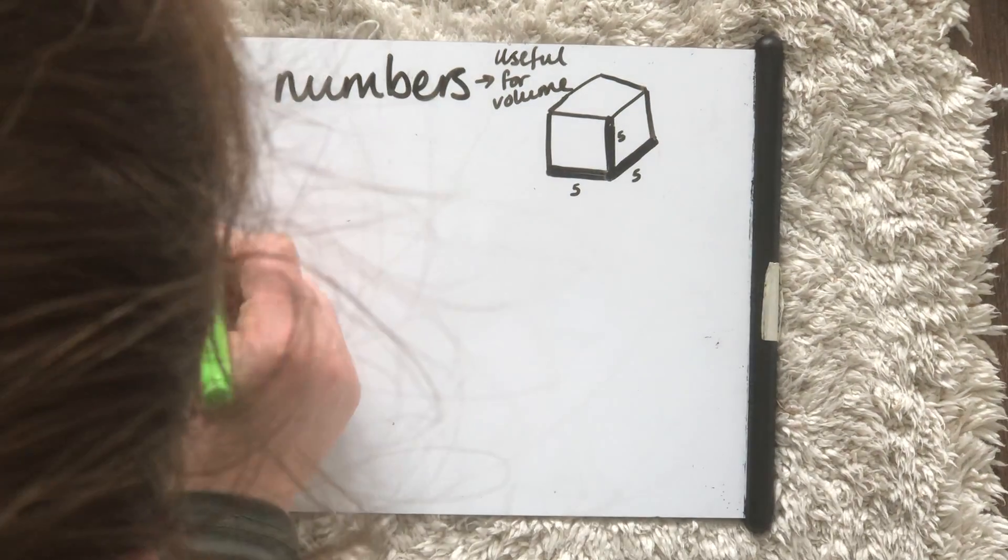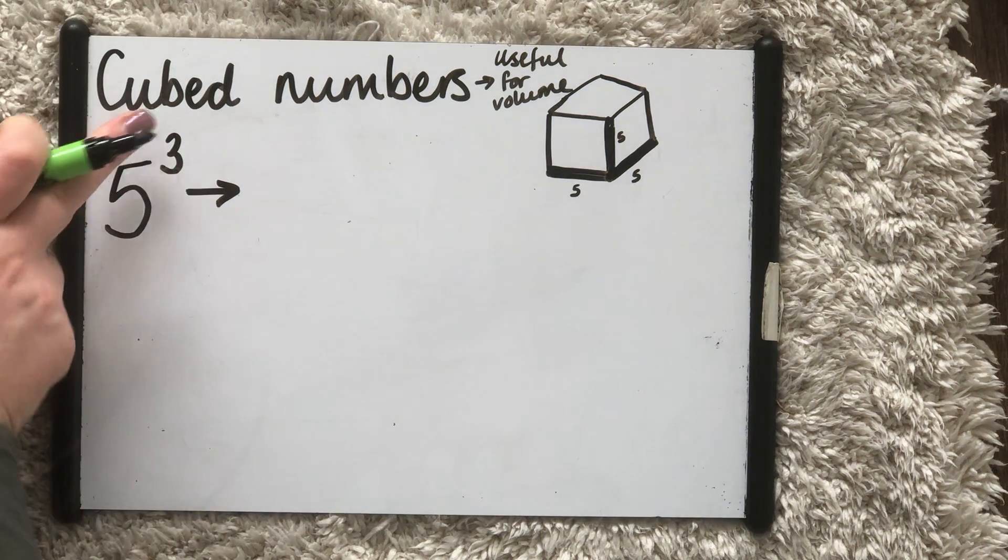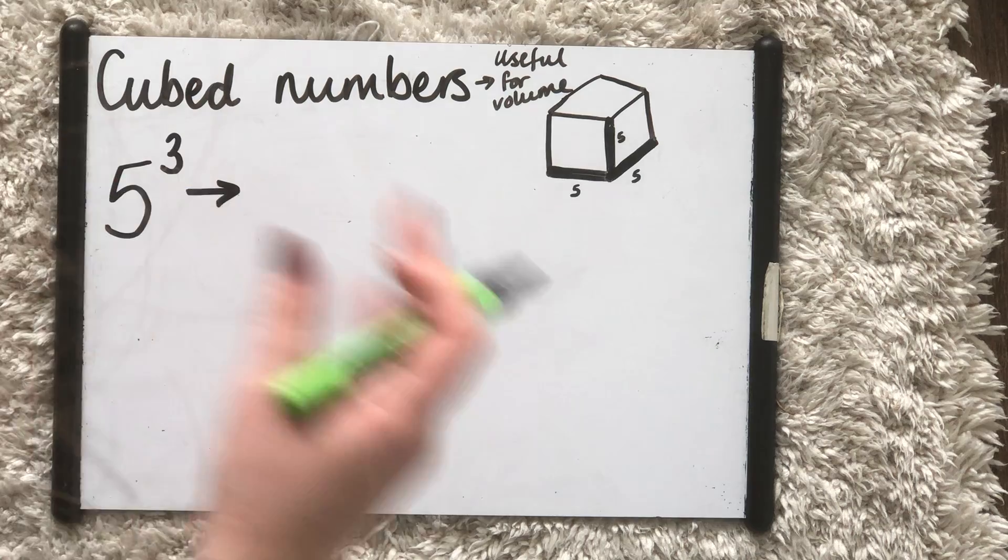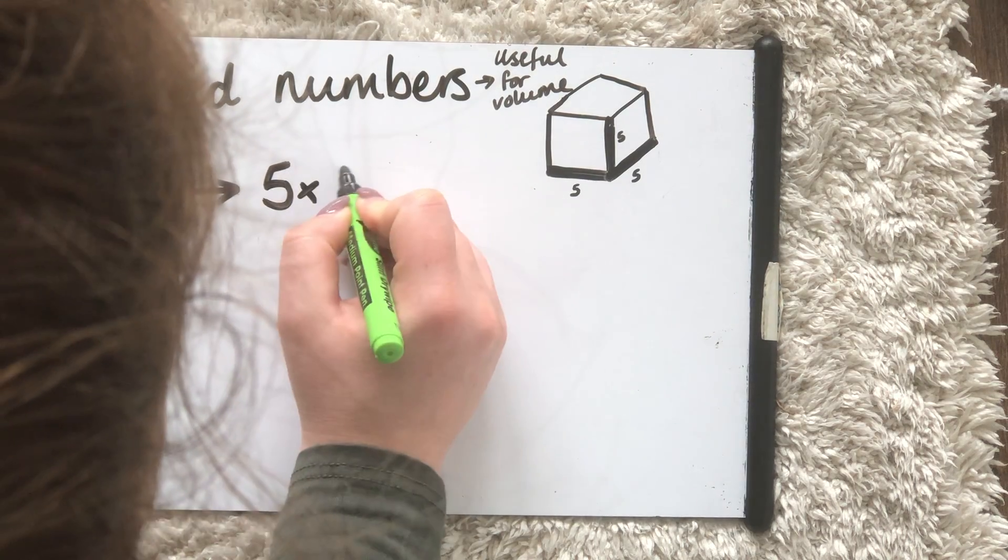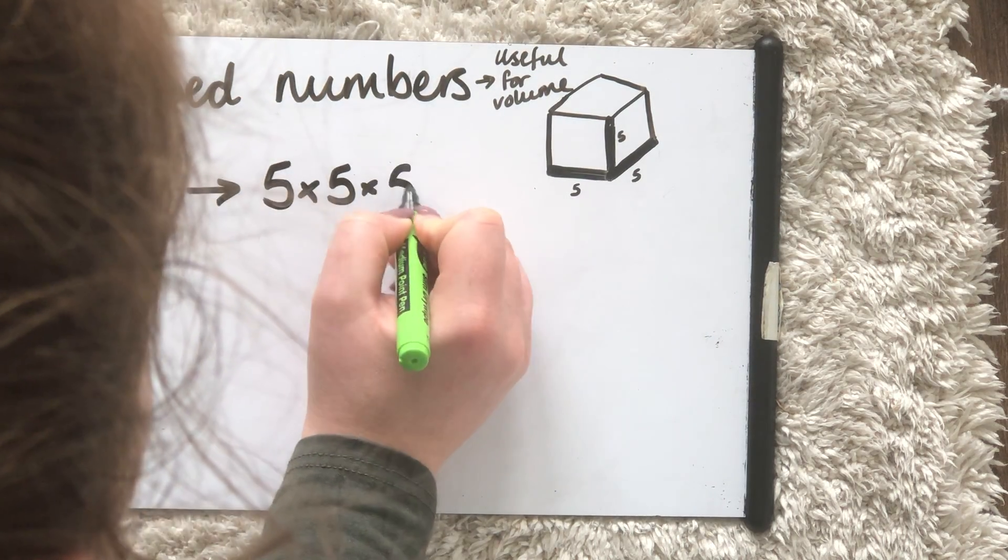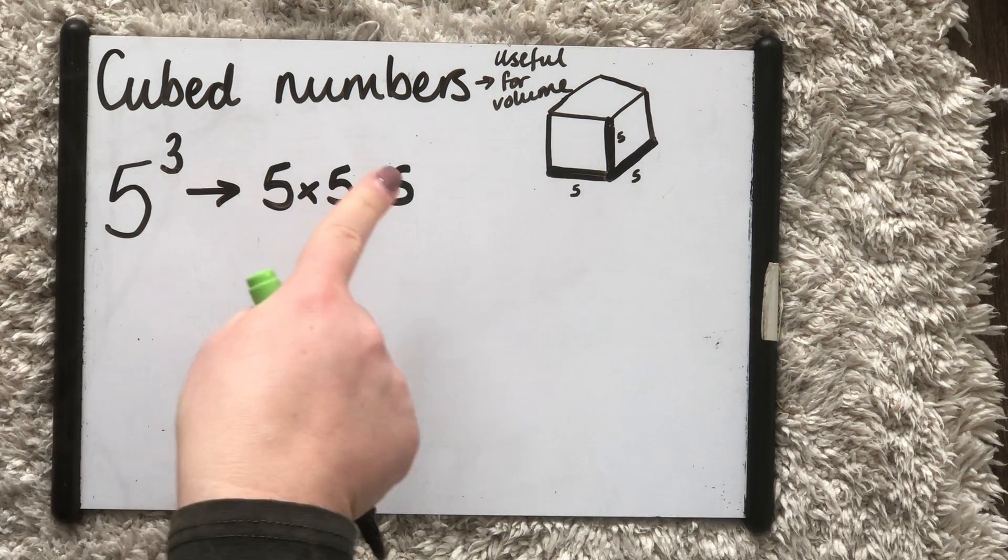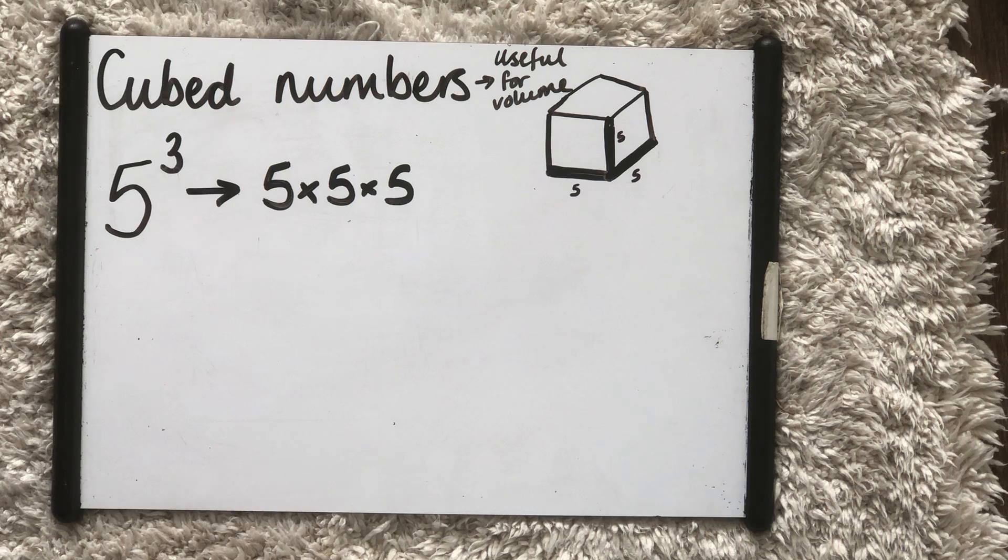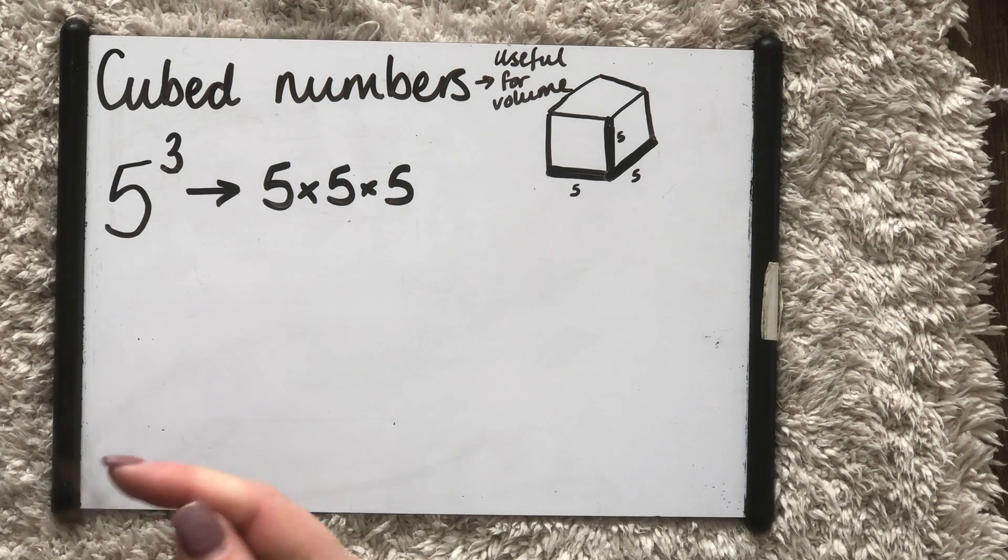As you can see here, we've got 5 cubed, or 5 to the power of 3. Expanding that into a calculation, it's 5 times 5 times 5. Some people might see that as 5, 10, 15—not quite, because what you've done there is you've actually only done 5 times 3.